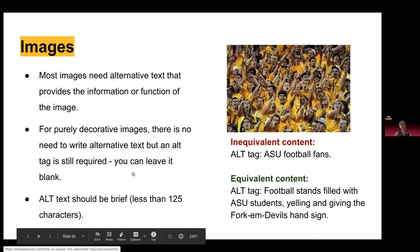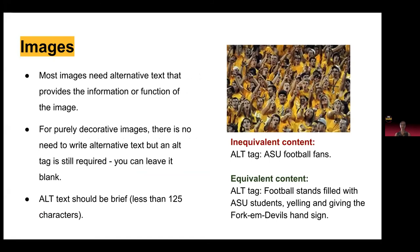Images — most images need alt text that provides the information or function of the image. For purely decorative images, you don't need to write anything, but you still need to put an alt tag and leave it blank. Alt text should be brief — less than 125 characters. Writing really good alt tags is a craft that takes time to develop. For example, instead of 'ASU football fans,' the equivalent content is 'Football stands filled with ASU students yelling and giving Fork 'em Devils hand signs' — that really communicates what sighted users can see.